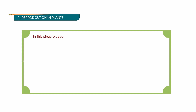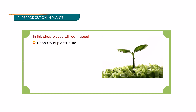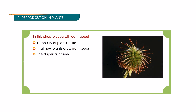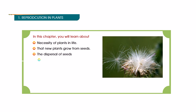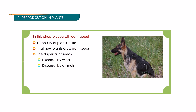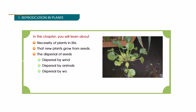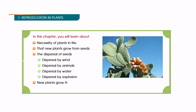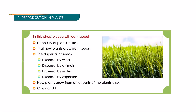In this chapter you will learn about: the necessity of plants in life; that new plants grow from seeds; the dispersal of seeds — dispersal by wind, dispersal by animals, dispersal by water, dispersal by explosion; new plants that grow from other parts of plants also; and crops and their protection.